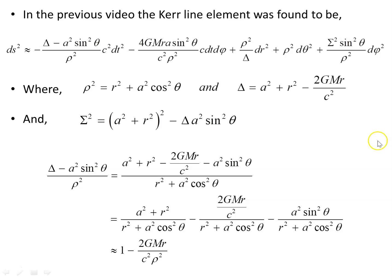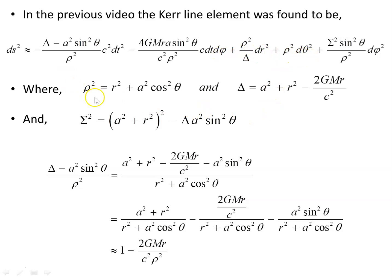In the previous video on the Kerr line element we found d s squared to be this expression here, in the Boyer-Lindquist coordinates t, phi, r and theta. We found that rho squared was this object here, delta was this expression here, and sigma squared was this.